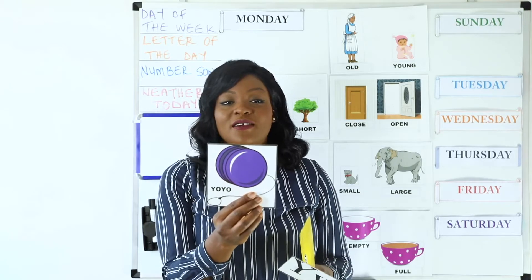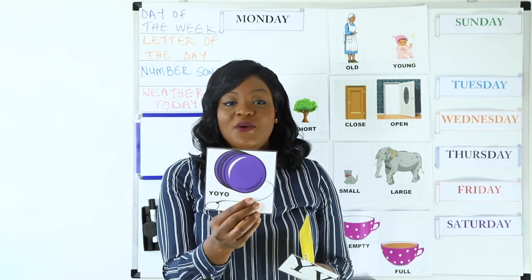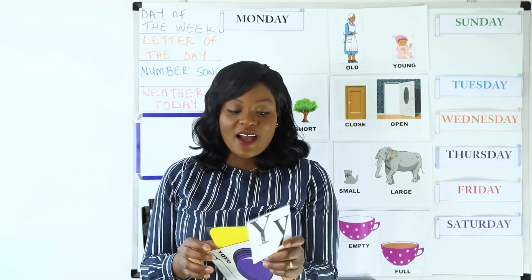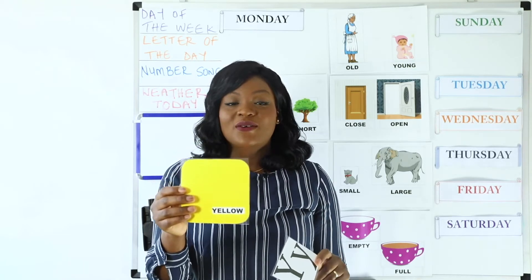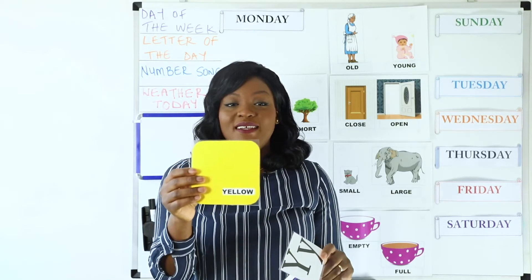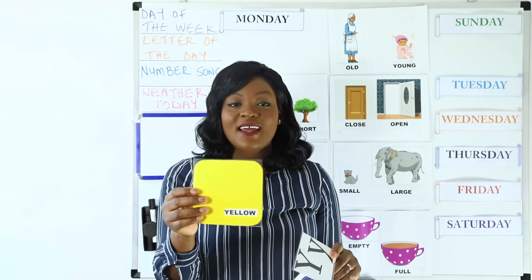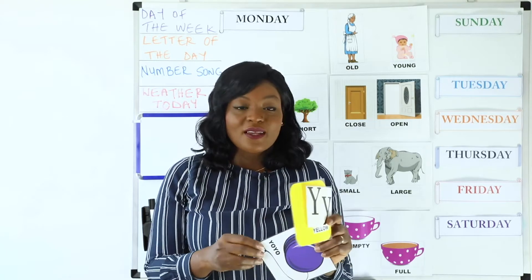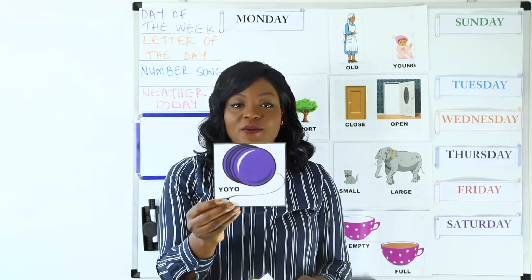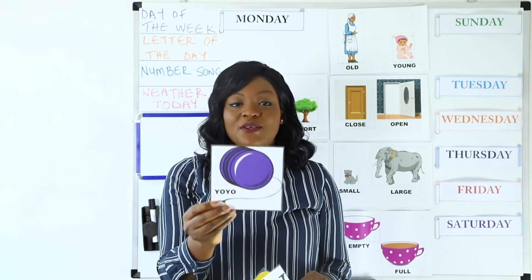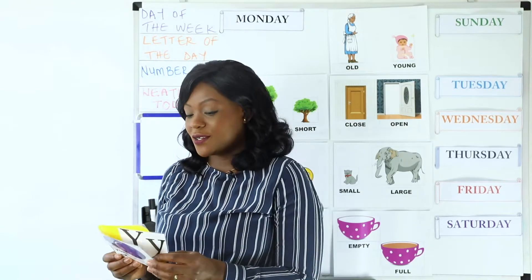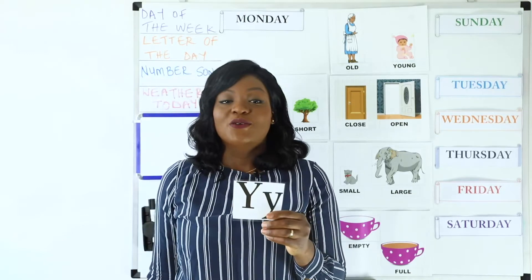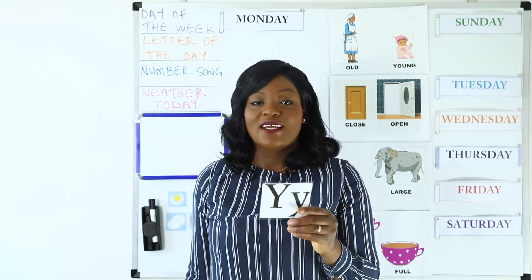We have Y in yo-yo — yo yo yo yo yo yo. And we have Y in yellow — yellow, yellow, yellow. Well done everyone. What other things can you find around you that start with the letter Y? Can you look around and find something that starts with Y?